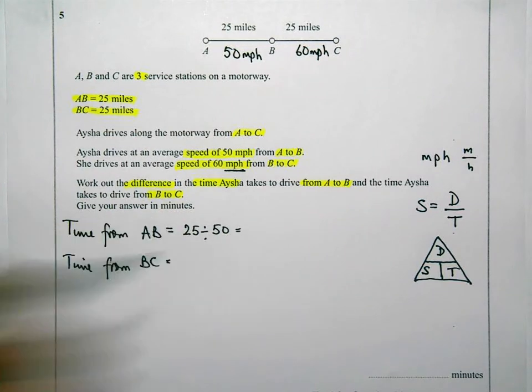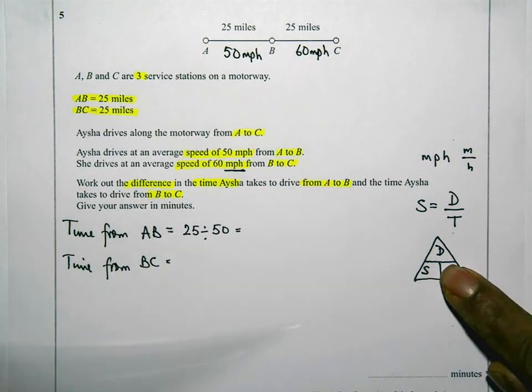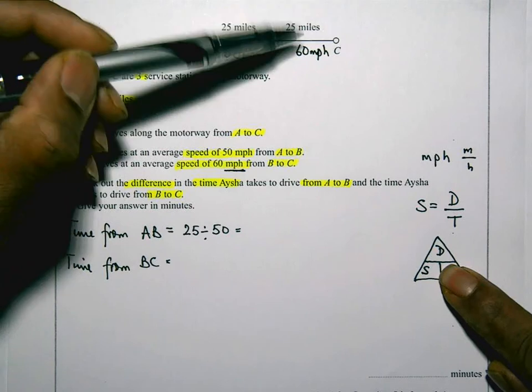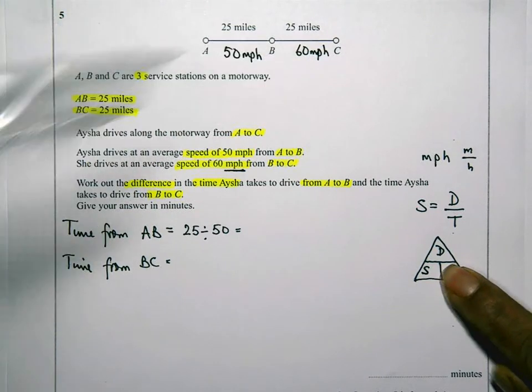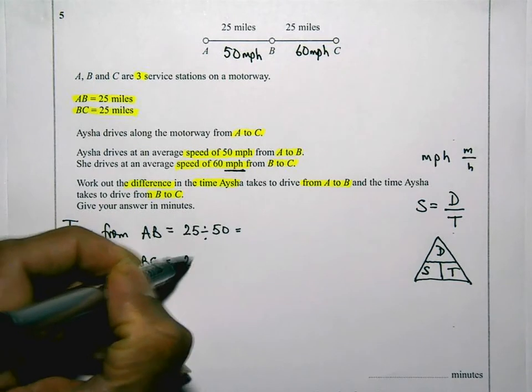And again, I'm using the same thing because it's time that I want to work out. From B to C, the distance is 25 and the speed is 60. So that's going to be 25 divided by 60.